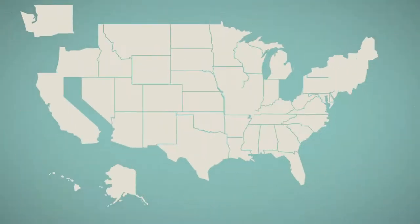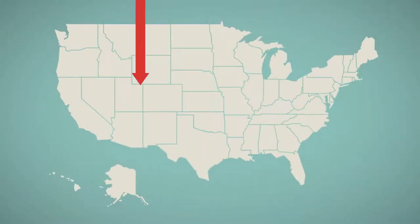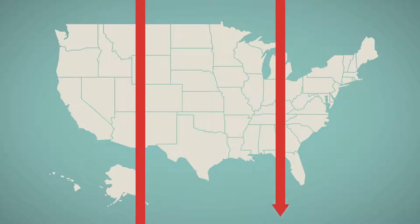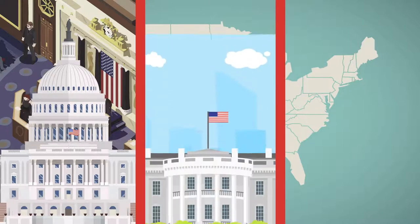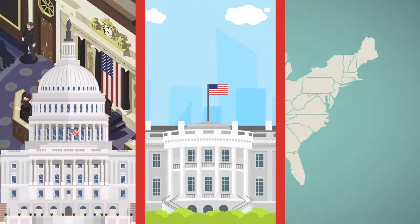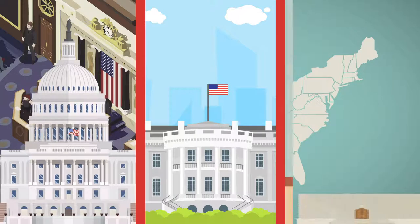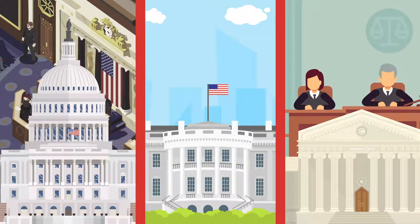In the American system of government, powers are divided among three branches. The legislative branch, which consists of the Senate and the House of Representatives, makes new law. The executive branch — the president and those that work under him or her — are responsible for executing the laws. The judicial branch, the courts, adjudicate disputes that arise under the law.